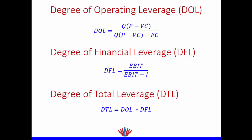The degree of operating leverage measures our business risk or operating risk. The formula is: degree of operating leverage equals the quantity multiplied by price minus variable cost per unit, divided by quantity multiplied by price minus variable cost per unit minus fixed cost.